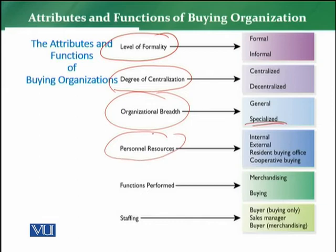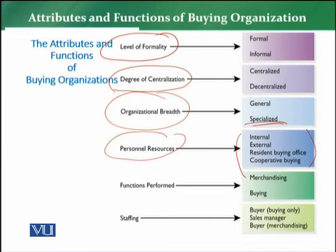Personnel resources — either they are internal resources or they are external resources — resident buying office یا cooperative buying۔ اگر resources externally کسی کے ساتھ contract کیے گئے ہیں، third party payroll کے اوپر ہیں، یا you have a resident buying office، یا pool buying / group buying ہے through buying houses، تو پھر cooperative buying کا concept بھی ہے۔ So آپ کا model personal resources کے اندر cooperative buying ہو سکتا ہے۔